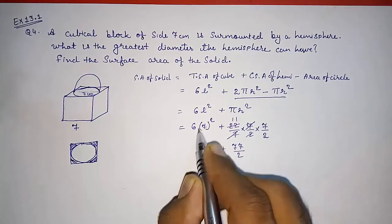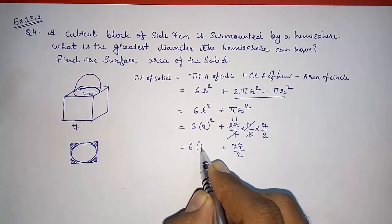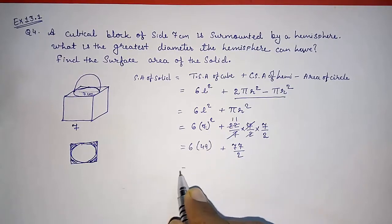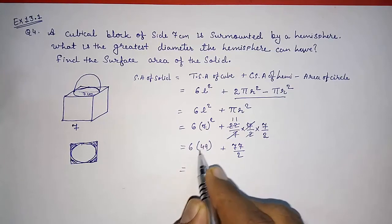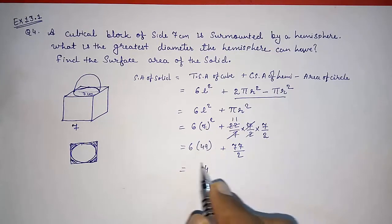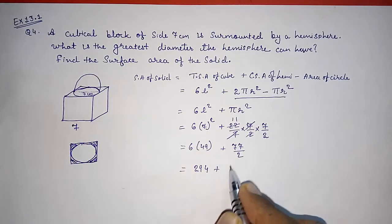And here 6 into 7 squared, that is 7 squared equals 49. Now we are going to multiply: 6 into 49 - 54, 5 carry, 24 plus 5 is 29. Then addition of this 77/2, that is 38.5.